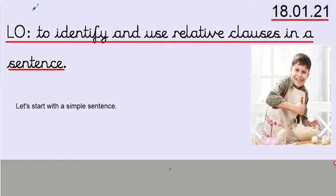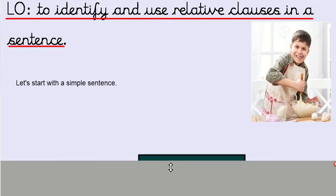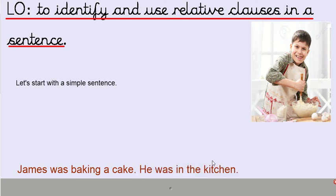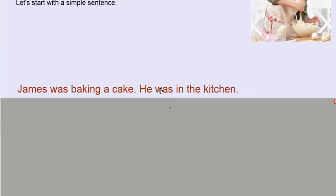Today's learning objective: to identify and use relative clauses in a sentence. You can see I've got a picture of a young man — he's looking rather cheeky, making himself a cake. We're going to start with a simple sentence: 'James was baking a cake.' Hmm, not a very interesting sentence — a simple sentence, a single clause. Let's try and make it a little bit more interesting. 'He was in the kitchen.' Still not that interesting. I wonder if I could use these two sentences to make a multi-clause or compound sentence.